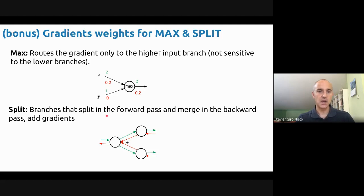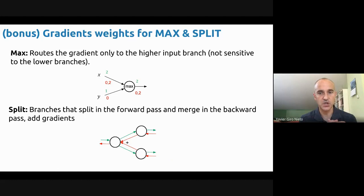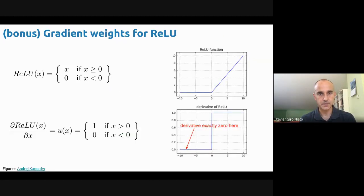On the other hand, if you have a split branch where data is spread in two branches, what you need to do is simply add the gradients coming from each direction — they just add together. These are not present in the perceptron but might be useful in the future.